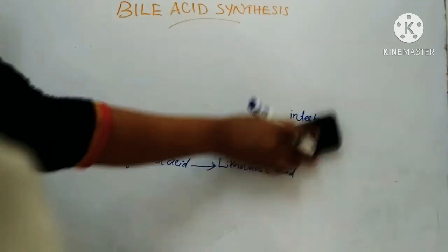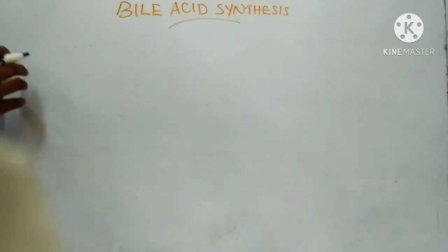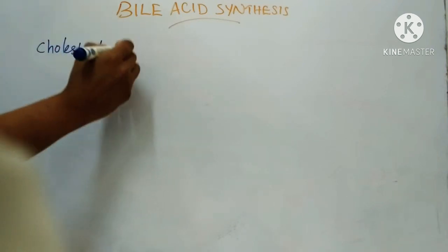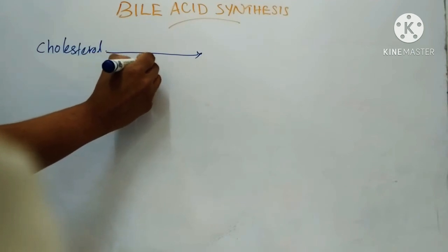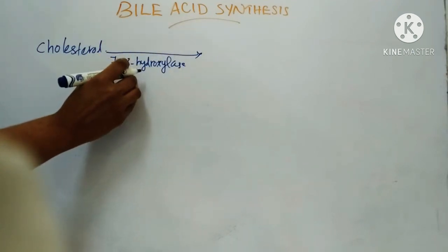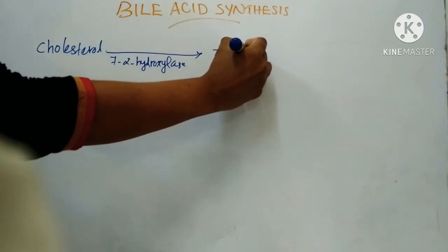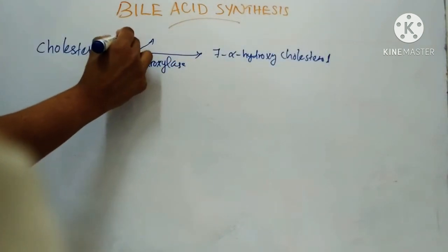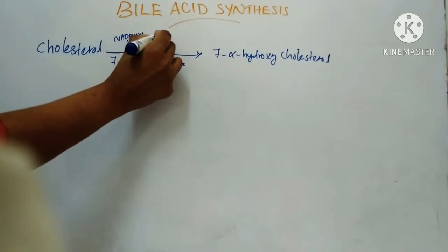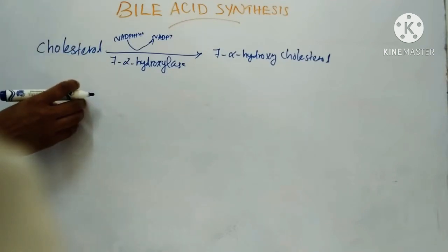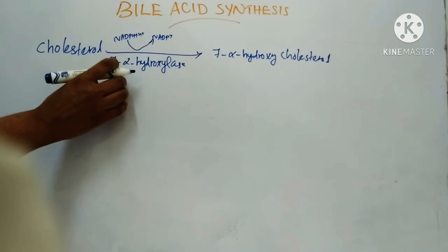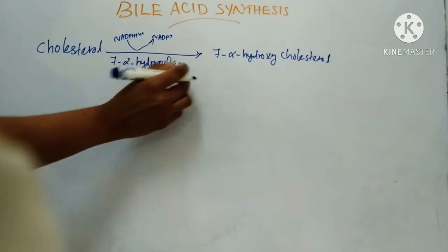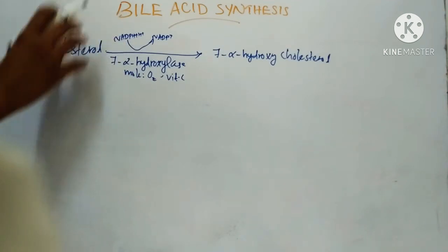Coming to the biosynthesis of these bile acids, the first step is 7-alpha-hydroxylation of cholesterol, catalyzed by the enzyme 7-alpha-hydroxylase, forming 7-alpha-hydroxycholesterol. This reaction requires NADPH + H⁺, producing NADP⁺. This is the rate-limiting reaction. The enzyme 7-alpha-hydroxylase is a microsomal enzyme that requires molecular oxygen, vitamin C as a cofactor, and NADPH.